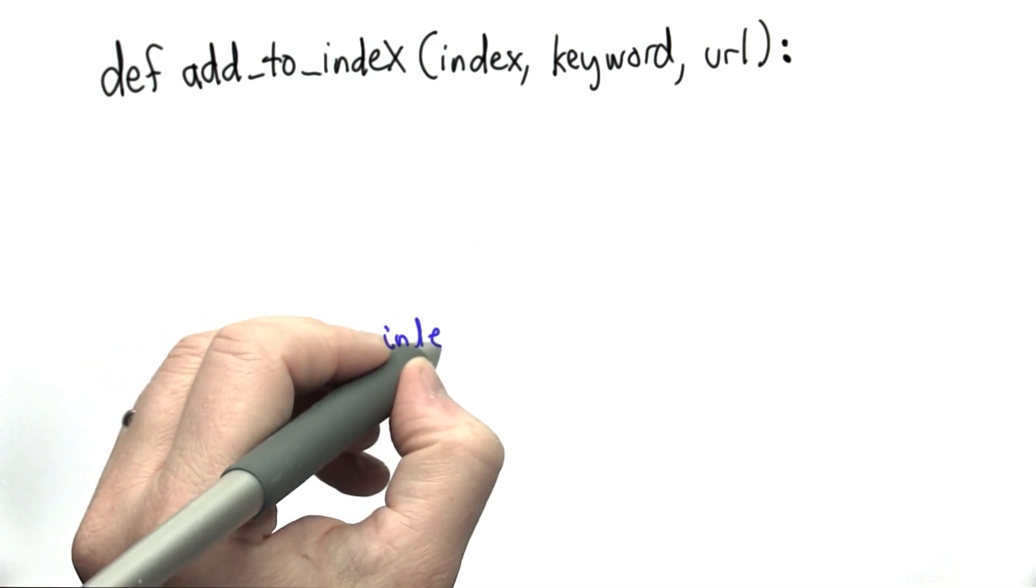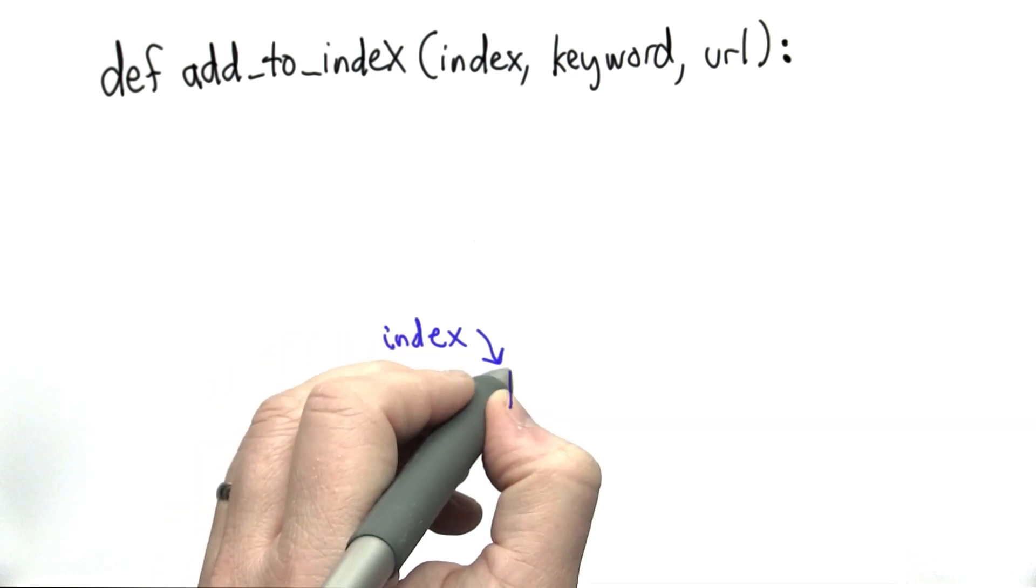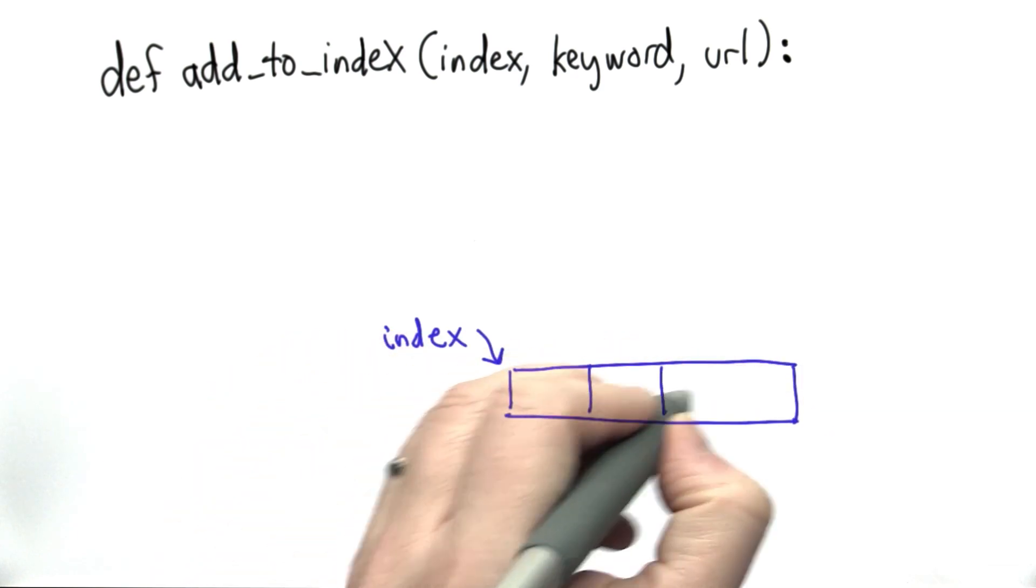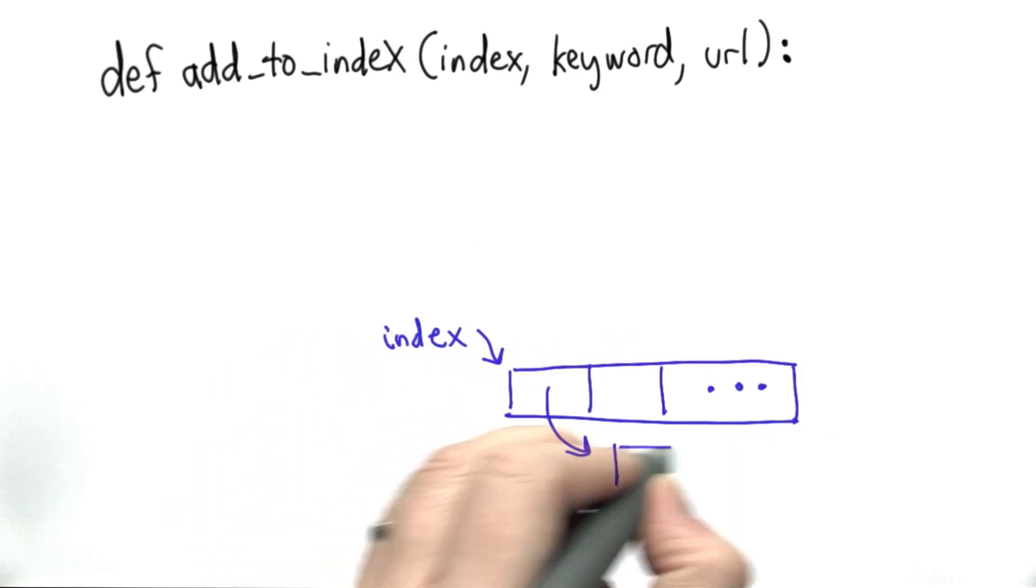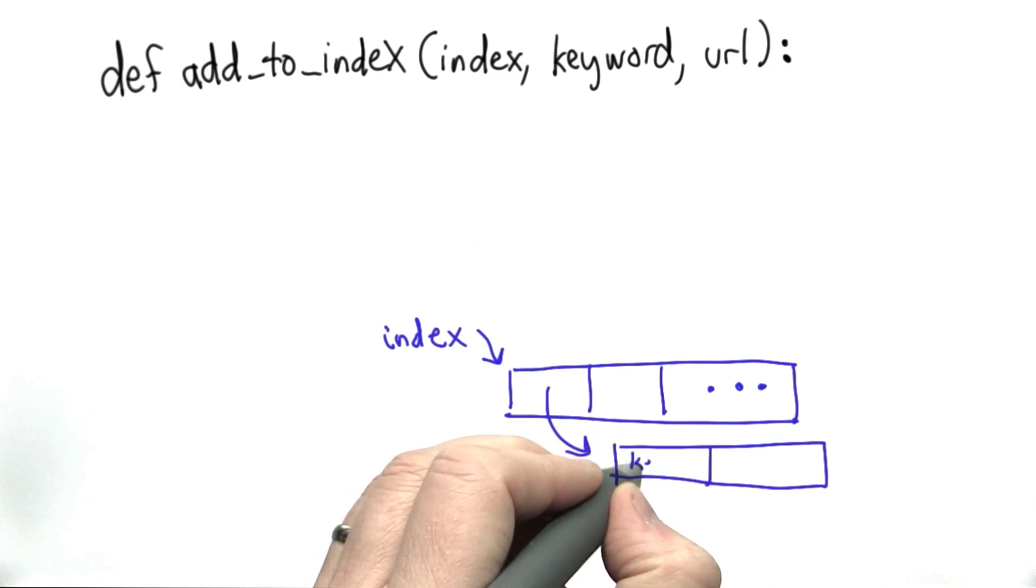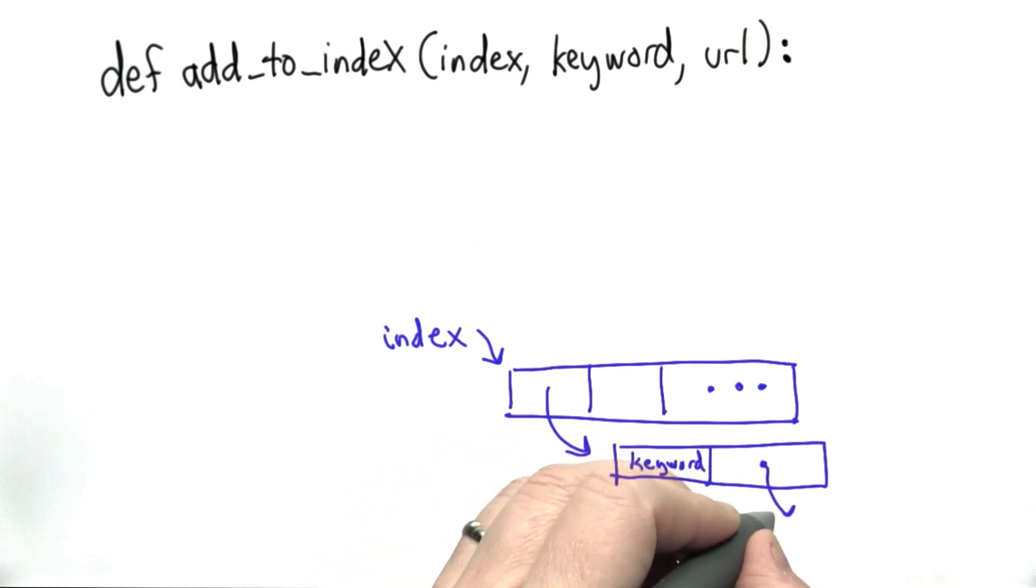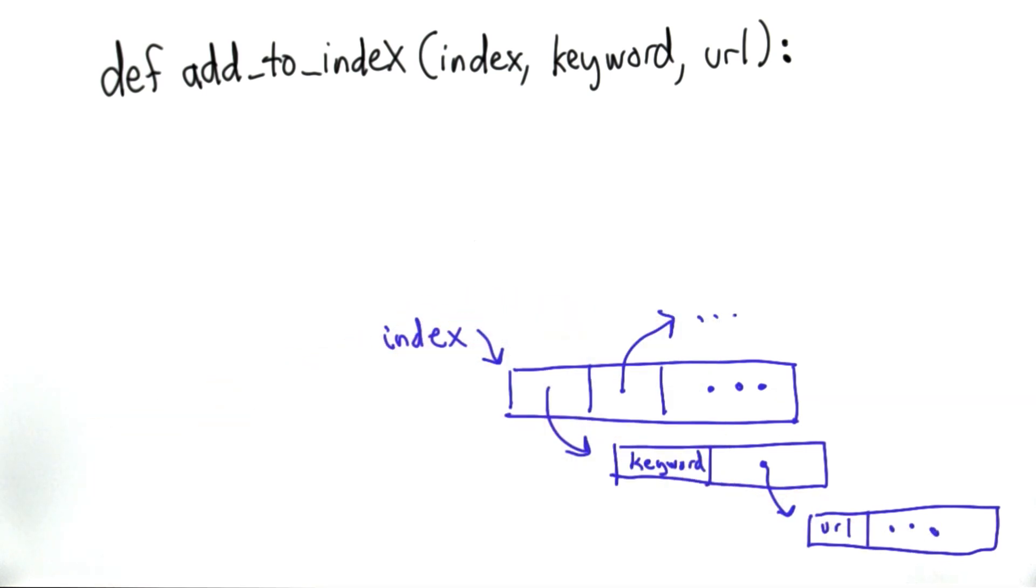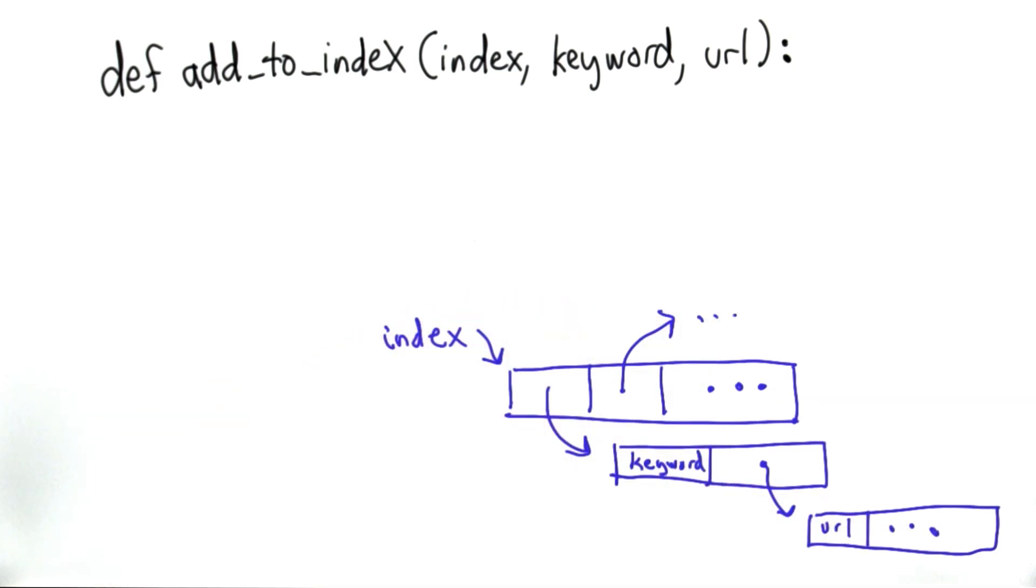To help keep track of what we're doing, I'm going to draw a reminder of what the data structure of index is. Remember that it's a list of entries, and each entry is itself a list where the first part is the keyword and the second part is a list of the URLs. So that's our data structure. That's going to help us figure out what to do to define addToIndex.